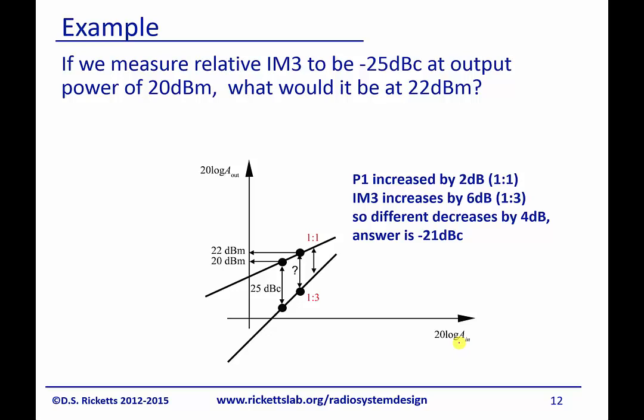Let's just talk a little bit about how these two lines come close to one. Let's take a look at the difference. So if we measure the relative IM3 to be minus 25 dbc, let's just look at that for a second. dbc, remember that's db relative to the carrier. By definition, the difference is dbc. This is omega naught or omega 1, and this is 3 omega 1. So by definition, the difference is dbc.